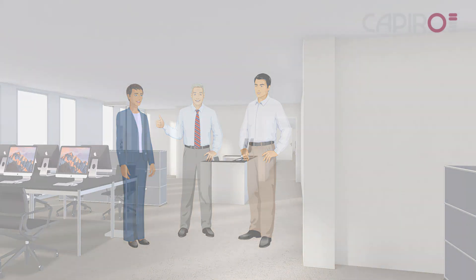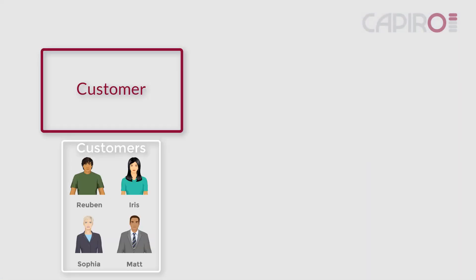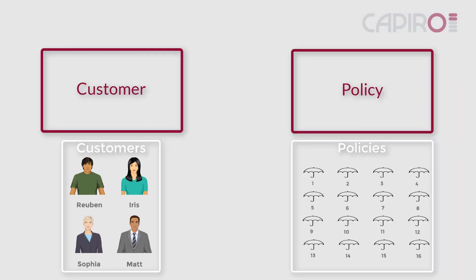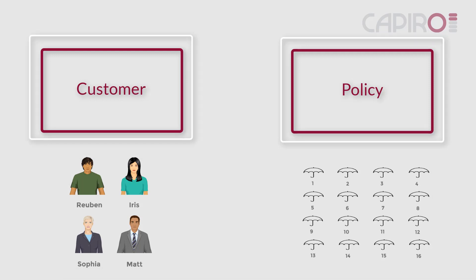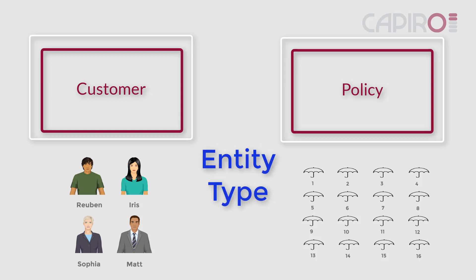Theo tells the analysts that the company has customers who buy insurance policies. Note the rectangles labeled 'customer' and 'policy.' The analysts call these classes or entity types. They're the start of the analyst's data model for this company.